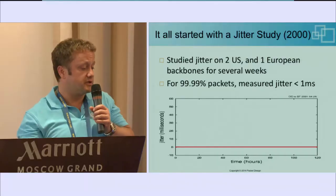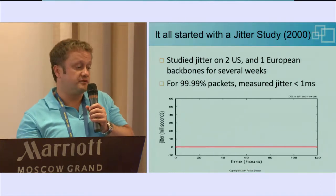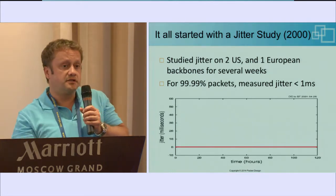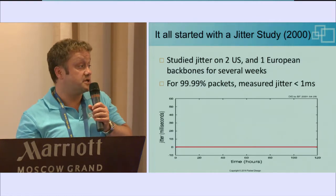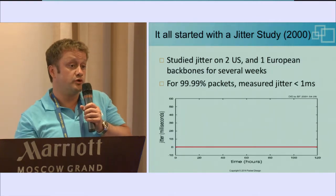This all started with a jitter study that we did back in 2000. We did four jitter studies across four backbones — three in the U.S. and one in Europe. This particular graph shows jitter between Washington D.C. and San Francisco across a one-week period. We found about one megabit per second traffic, and 99.99% of the time the network was extremely clean, almost no jitter.